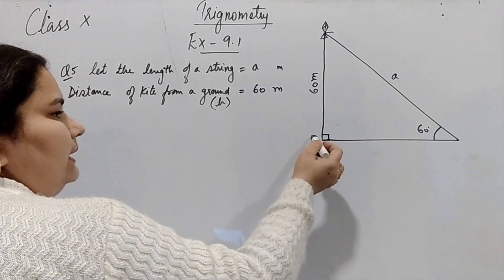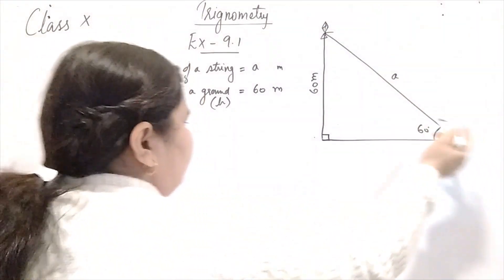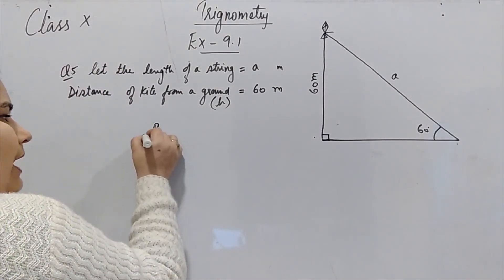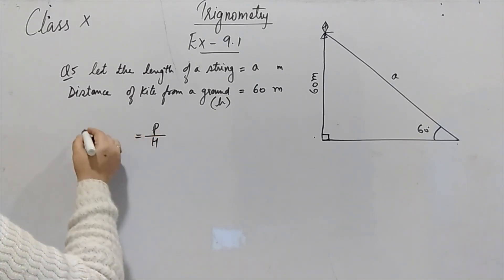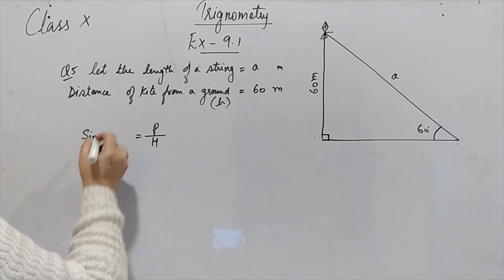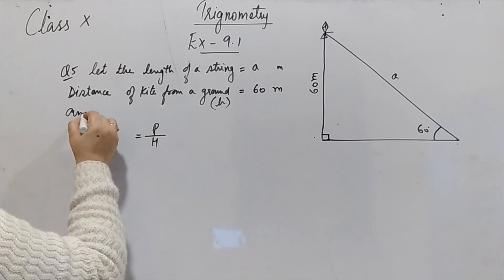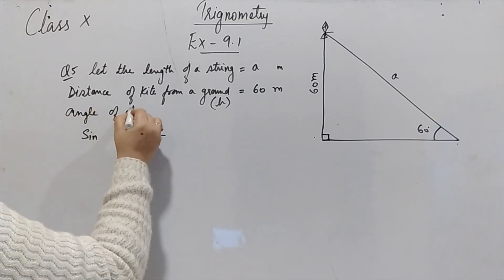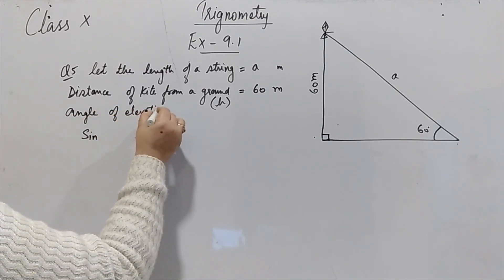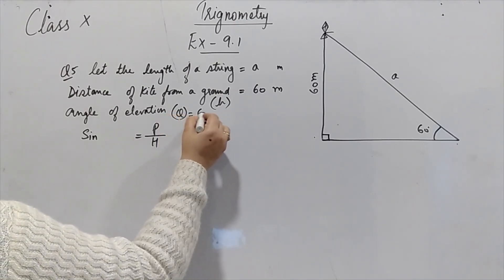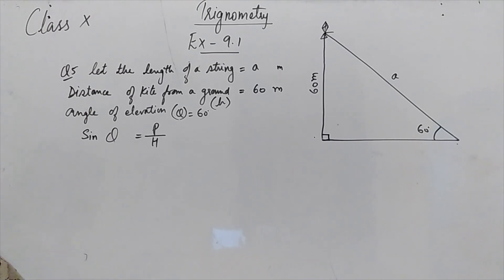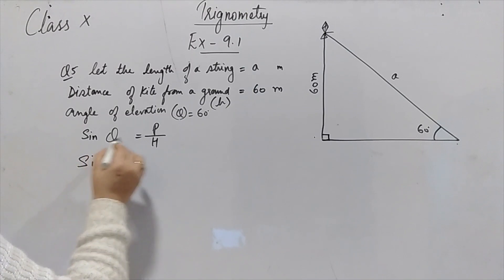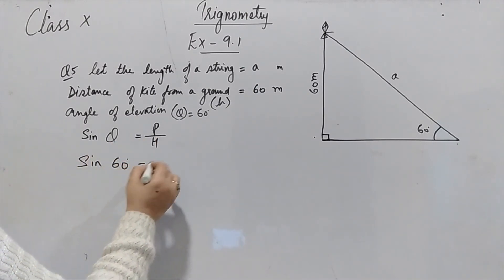This is the perpendicular and this is the hypotenuse — perpendicular P and hypotenuse H. The trigonometric ratio to use here is sine. The angle of elevation is theta, which is 60 degrees. So sin theta equals perpendicular upon hypotenuse.